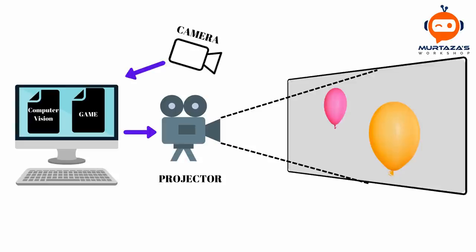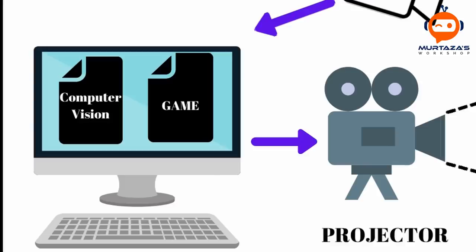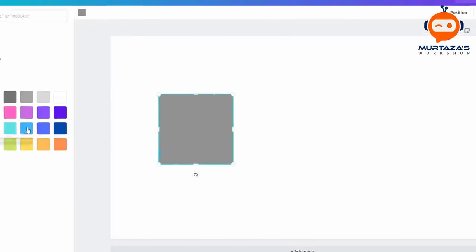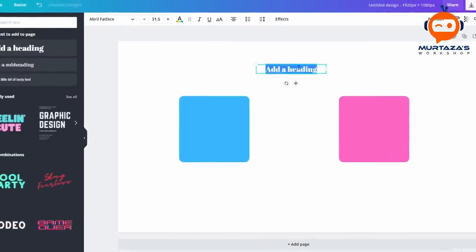The camera would use computer vision methods to find the position of the balloons and check if they are hit or not. If the balloon is hit, it would send the command to the game and it would pop the balloon and generate a new one. The first step was to put all my thoughts together.